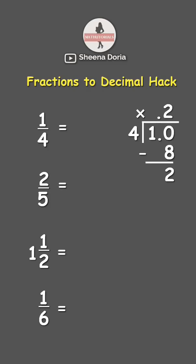Since there's still a remainder, we need to add another 0 — so bring down 0 — which is 20 divided by 4 is 5. 5 times 4 is 20, while 20 minus 20 is 0. Therefore, our answer is 0.25.